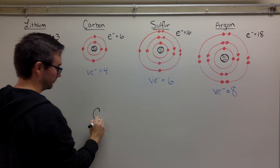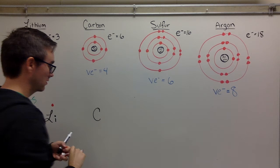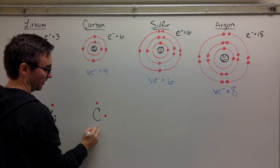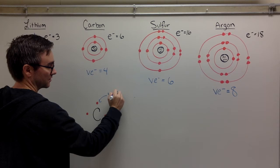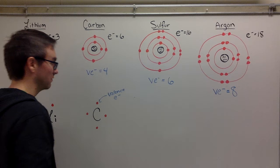Carbon has the letter C. It has six electrons but only four of them are valence electrons: one, two, three, four. That's it for our Lewis dot structure. The dots on the outside, those are going to be our valence electrons.